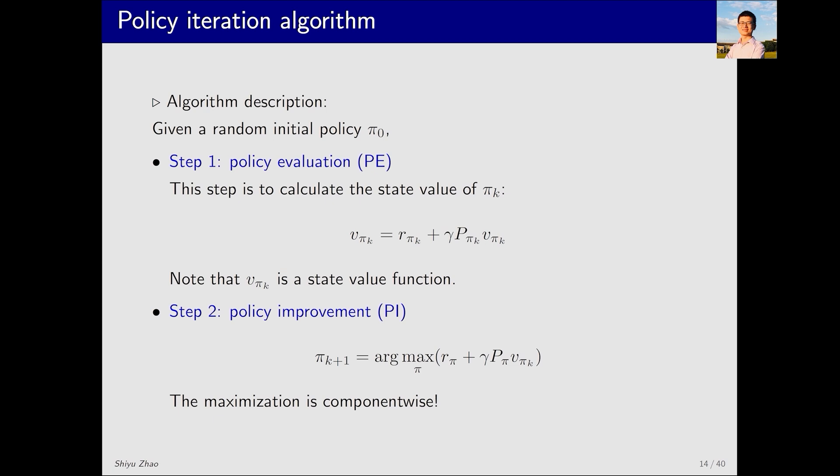What is this algorithm? Initially, there's an initial policy denoted as π0, which could be any given policy, perhaps not a good one. We'll iterate to find an optimal policy. Each iteration consists of two steps. The first step is policy evaluation, abbreviated as PE. When given a policy, we can solve its corresponding Bellman equation and obtain the state value. This process is called policy evaluation.